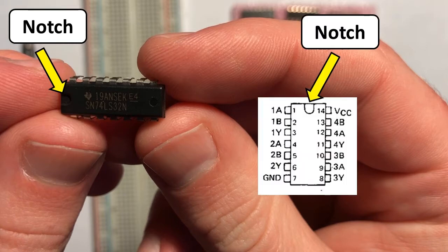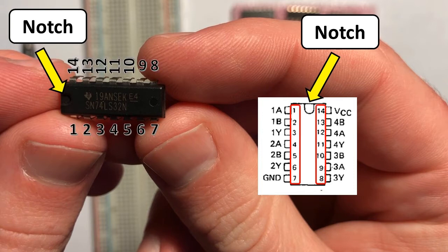From that same data sheet we found online, there's something called a pinout diagram. Our pinout diagram also has a notch. Relating these two, we can then tell which pins are which on our IC. That's important if we want to wire things correctly.